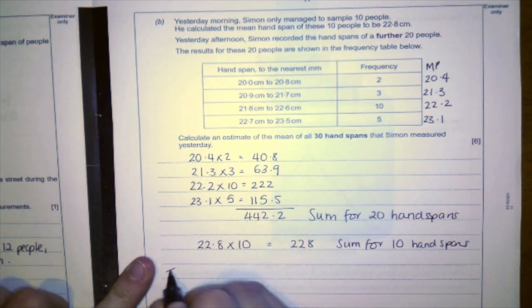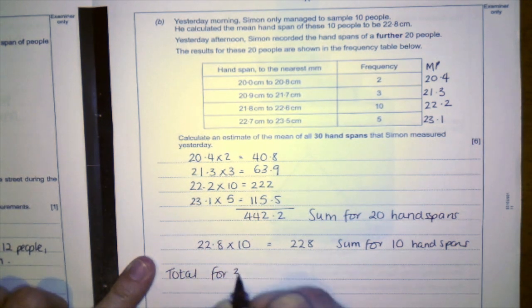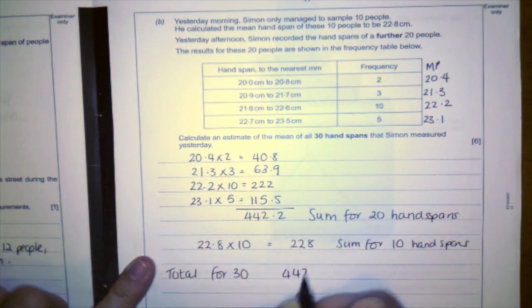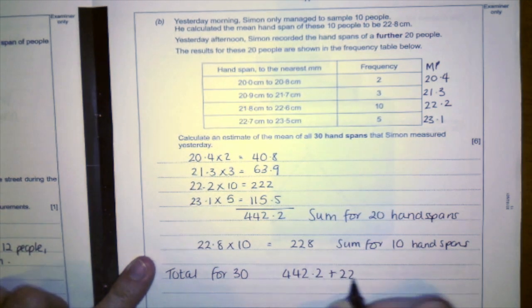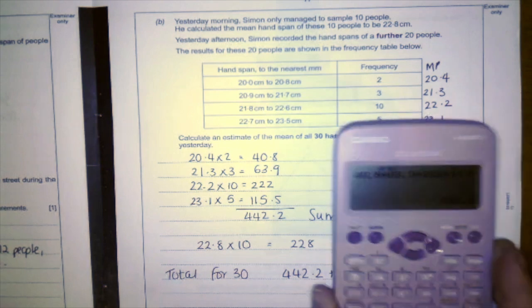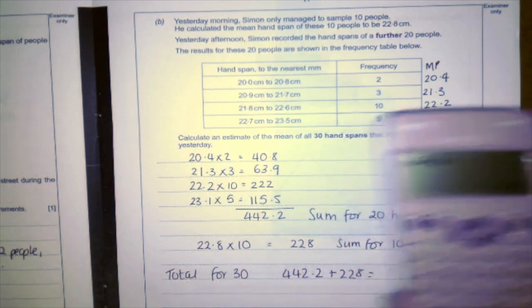Okay, so now in total for 30, it's 442.2 plus the 228, so plus 228.